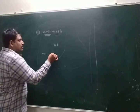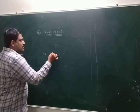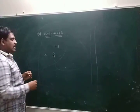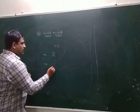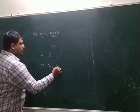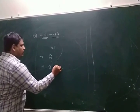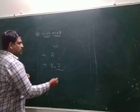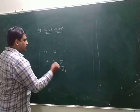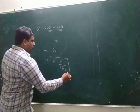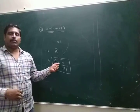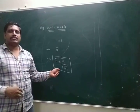A unit vector is mathematically represented as 'a cap.' The formula for a cap is: unit vector a_cap equals a_bar divided by modulus of a_bar. That is: a_cap = ā / |ā|.